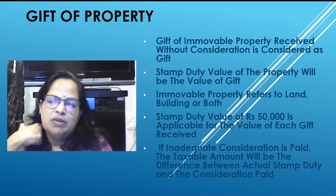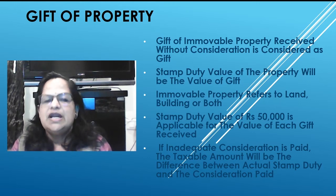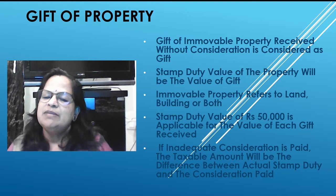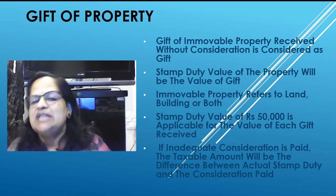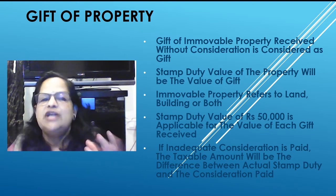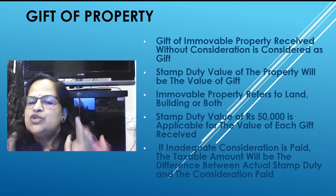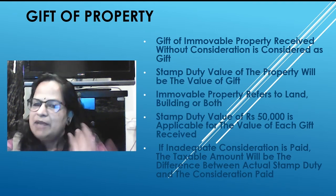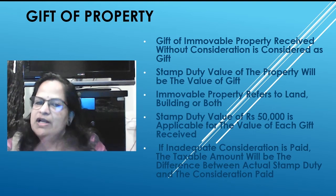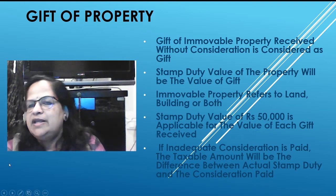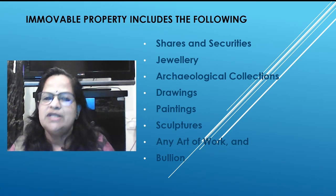If inadequate consideration is paid, the taxable amount will be the difference between the actual stamp duty value and the consideration paid. For example, if an 80 lakh property is shown as only 60 lakhs in the documents, the 20 lakh difference will be considered black money — treated as a gift and taxed accordingly. Immovable property for this purpose also includes shares, securities, jewelry, archaeological collections, drawings, paintings, sculptures, and bullion.